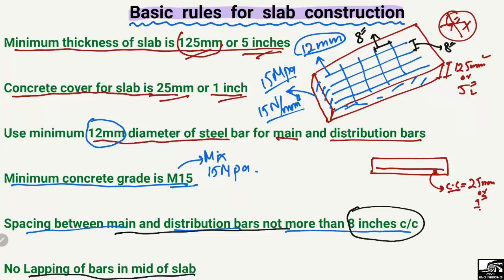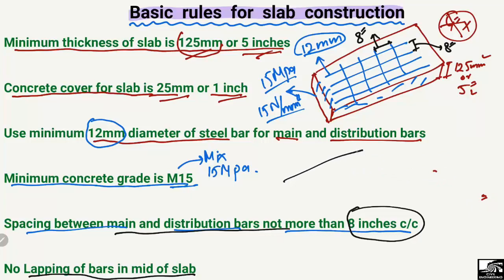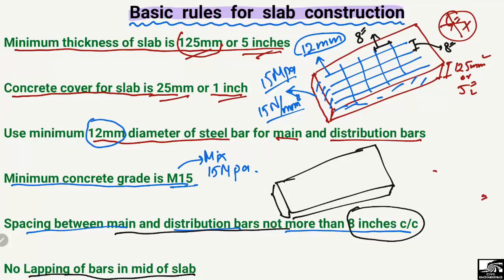The next rule is that there should be no lapping of the bars in the middle of the slab span. If these are the steel bars placed inside the slab, the lapping — where we connect one bar with another in order to transfer stresses — should not be done in the middle of the span. Doing lapping in the mid-span is wrong.